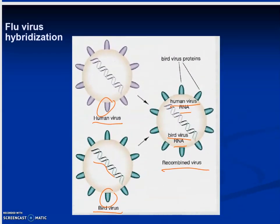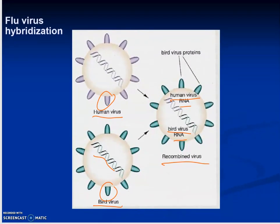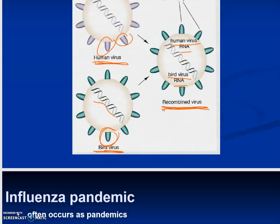Another diagram shows flu virus hybridization: a human virus with light purple spike proteins and a bird virus with green spike proteins can recombine into a hybrid virus containing part human and part bird viral DNA. These kinds of recombined viruses can be rather dangerous because they can infect multiple species.